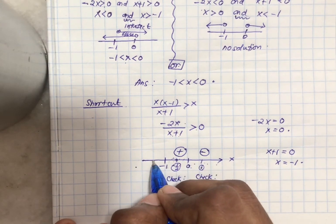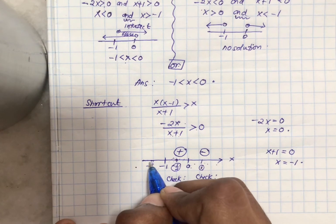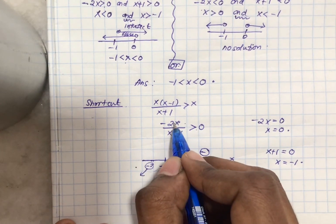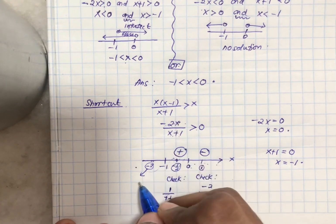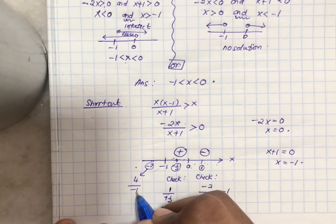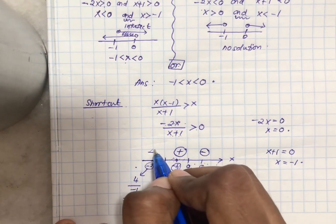And then you take another value from here. Let's say you are taking negative 2. You just simply take any integer that you think it is easy for you to work on. Then let's do the checking. So I am going to get negative 2 times negative 2 which is 4 over negative 2 plus 1 which is negative 1. Overall it is negative 4 and this is a negative number. You put a negative here.